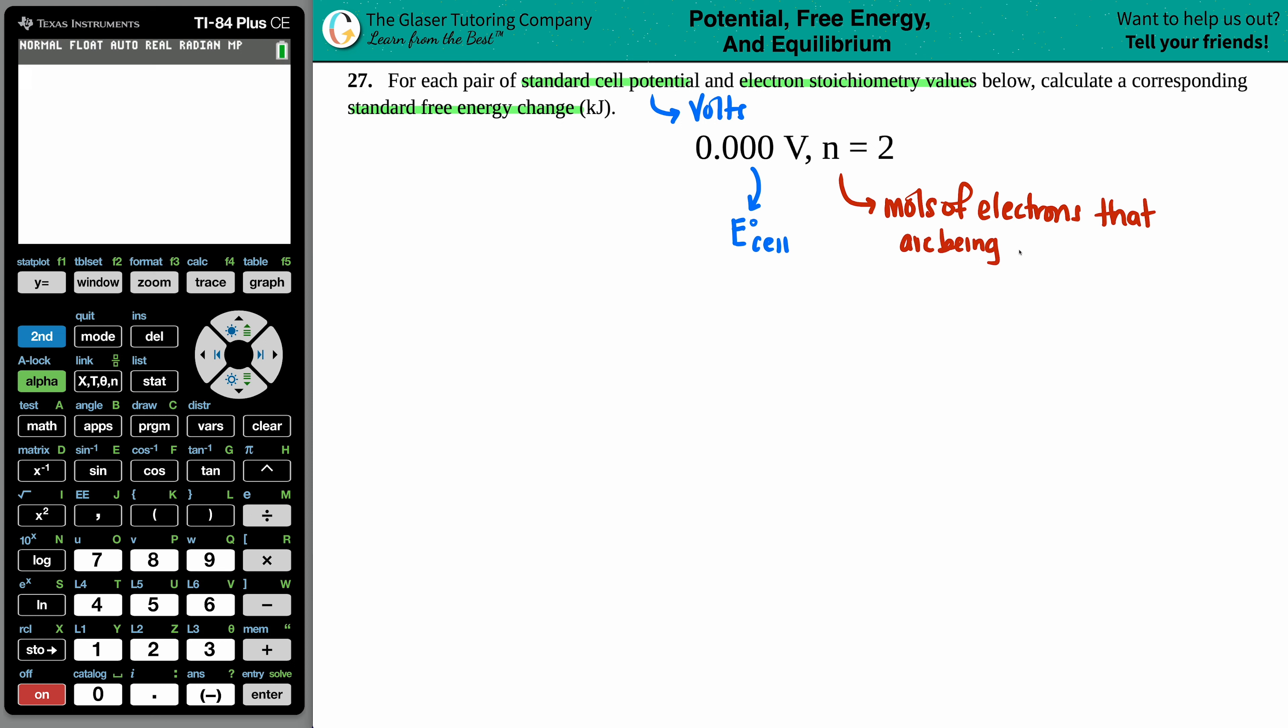So in this instance, whatever reaction this is, there's going to be a total of two electrons that are being transferred from the oxidant, the oxidizing species to the reductant.